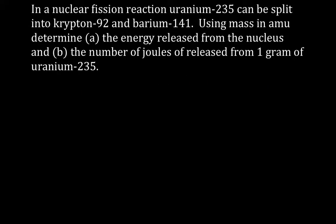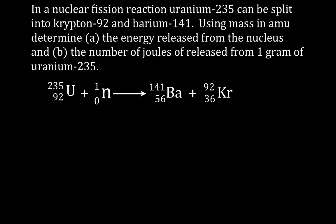This is what our problem says: in a nuclear fission reaction, uranium-235 can be split into krypton-92 and barium-141. We want to use the mass in atomic mass units (AMUs) to determine the energy released from one of those reactions, and also the total energy in joules released from one gram of uranium-235. So we have uranium-235, and if we add a neutron to that, we get uranium-236. That will be unstable and will split into barium-141 and krypton-92, and from that we also get three neutrons.